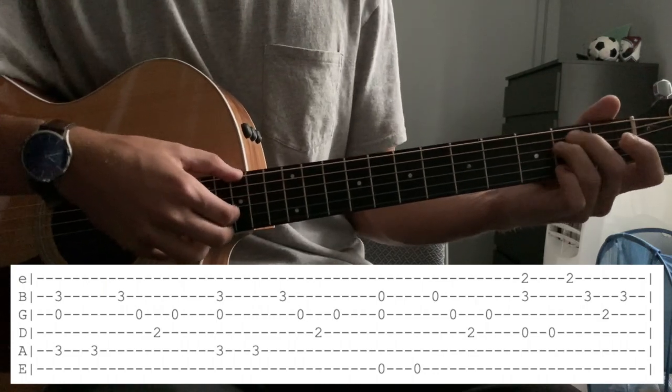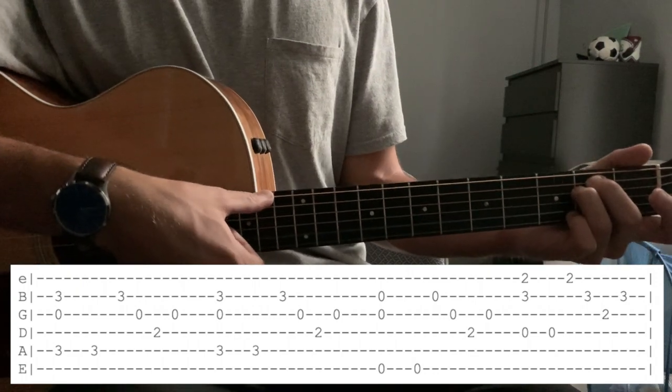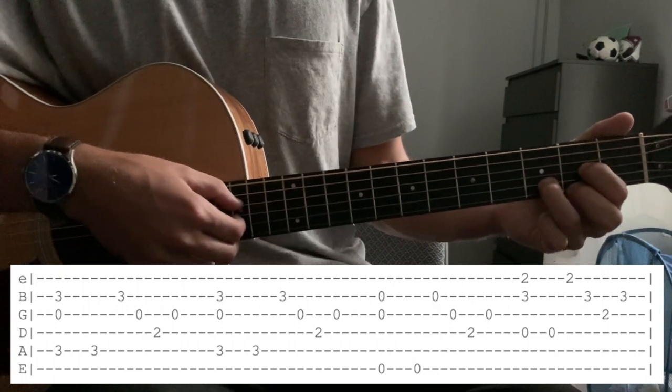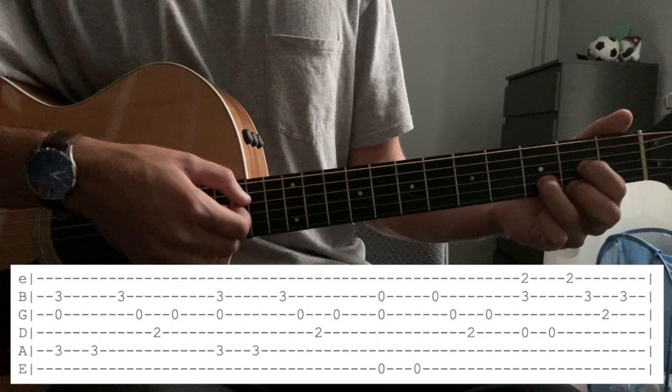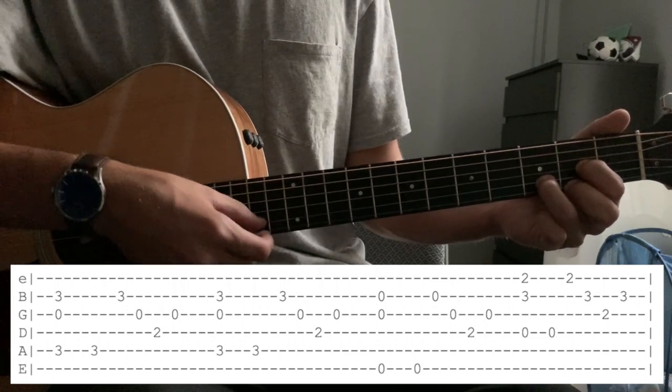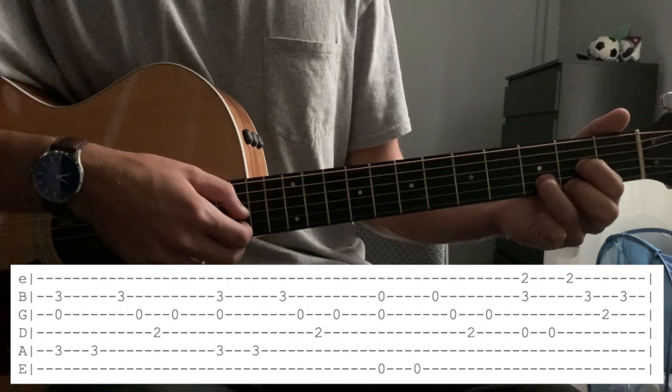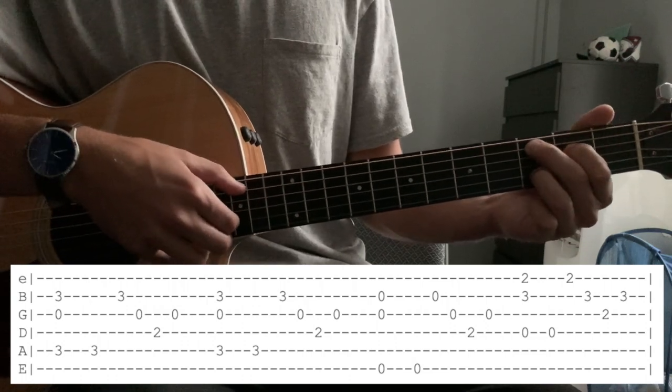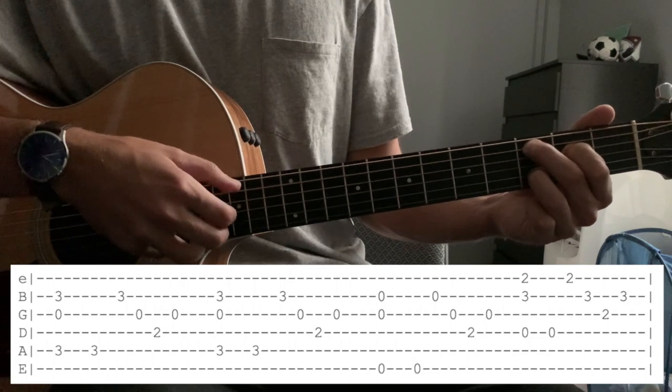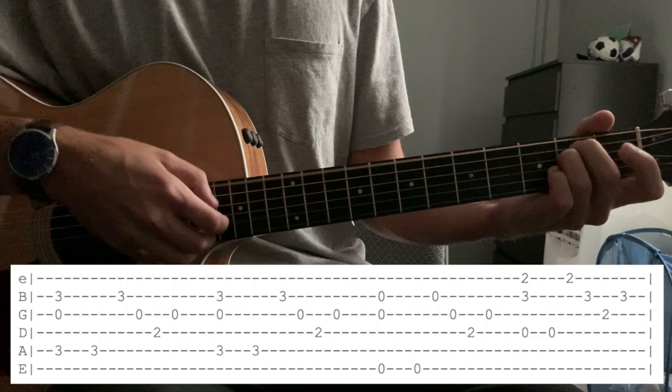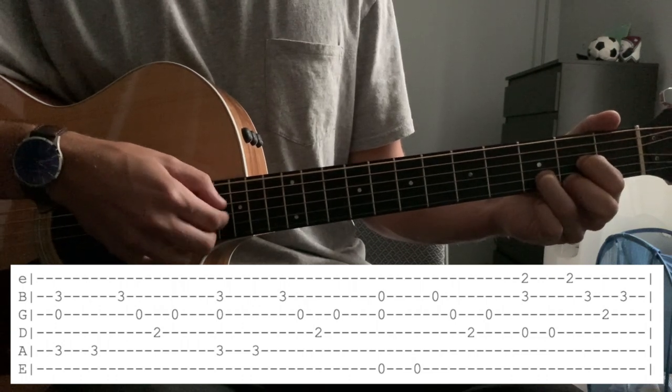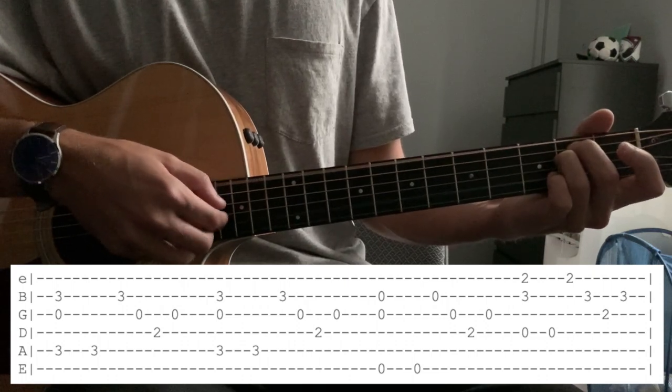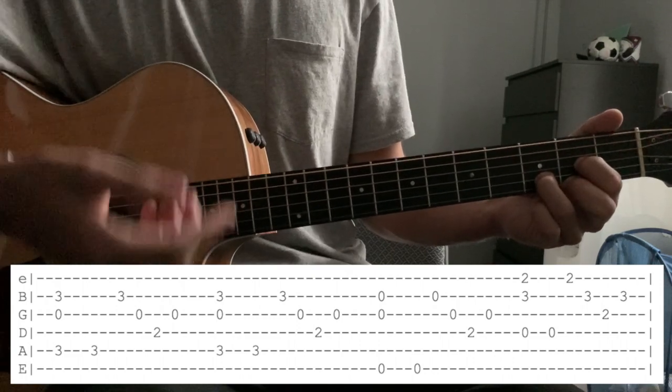Then we're going to switch to an E minor chord and do something identical, which is now our root note switches to the low E string instead of that A string. Then go to a D chord. On the D chord, the strings that we're plucking switch to the B and the E instead of the G and the B string. Okay, so this part goes like this. And this leads into the chorus.